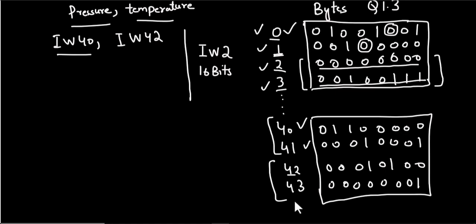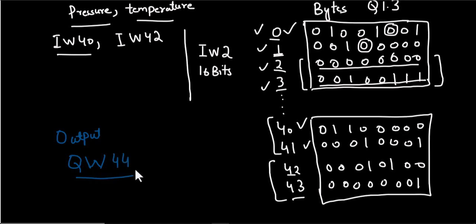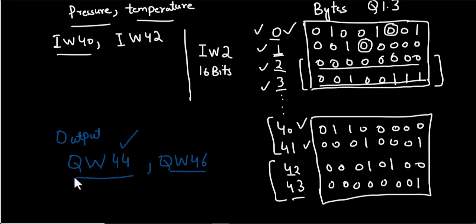This is how we address analog input signals. Similarly, we can address analog output signals — except the symbol is Q instead of I, and the rest of the addressing is the same. QW 44 means byte 44 and byte 45. QW 46 means byte 46 and byte 47. We cannot use QW 45 because byte 45 has already been reserved by QW 44.